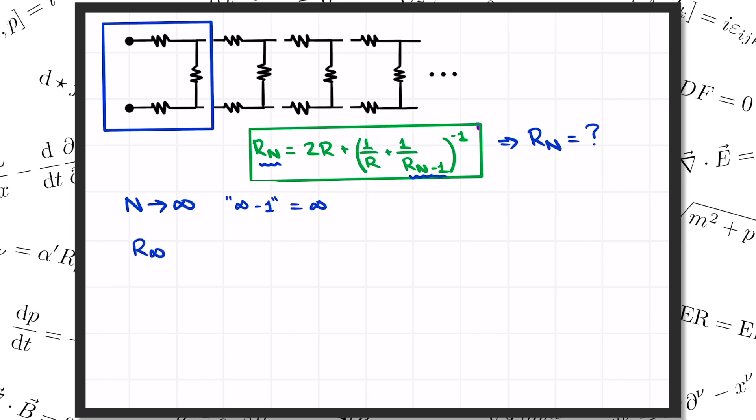R sub infinity equals 2R plus 1 over R plus 1 over R infinity inverse. If we rearrange this a little bit, we can put it in the form of a standard quadratic equation for the total resistance. R infinity squared minus 2R times R infinity minus 2R squared equals 0. Now we'll just solve this quadratic equation, and we'll get the total resistance of our ladder.